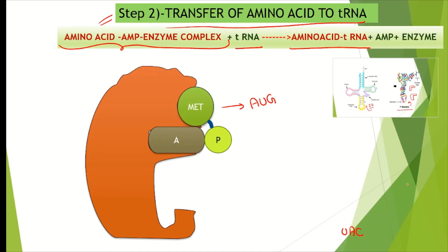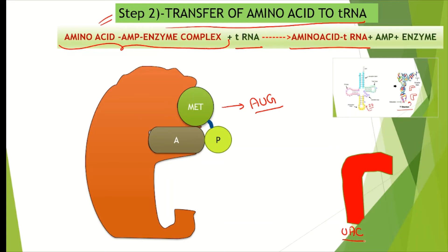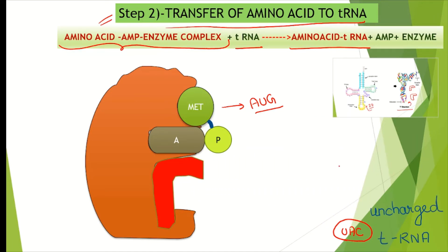This aminoacyl adenylate synthetase complex will now combine with a specific transfer RNA. In the methionine example, methionine has the codon AUG, which means the transfer RNA should have UAC in its anticodon region. This transfer RNA is specific for methionine and is uncharged at this time. It will bind to the tRNA binding site of the aminoacyl-tRNA synthetase enzyme.